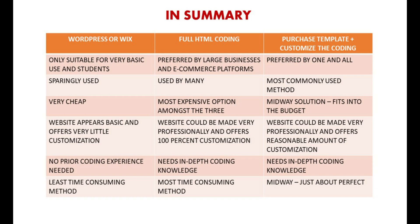In a nutshell, to wrap up — there are three different methods of creating a website. Method 1 uses WordPress or Wix.com: cheap and easy, requires no prior coding knowledge, but only used by beginners and small businesses since websites created on such platforms offer only very basic customization. Method 2 is writing the complete code from scratch using HTML and CSS, adopted by large businesses and e-commerce companies — the most professional and costliest method. Method 3 is the most frequently used: you purchase a base template and modify the coding to suit specific requirements — widely used, offering tremendous flexibility and a quality website at low cost.